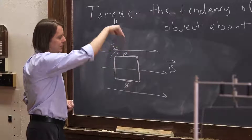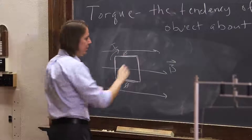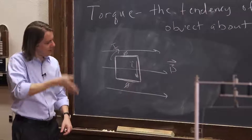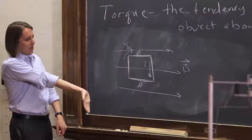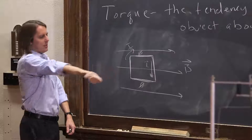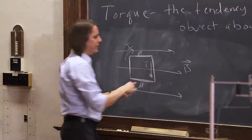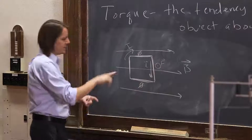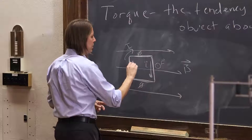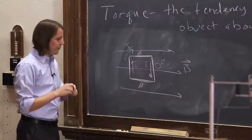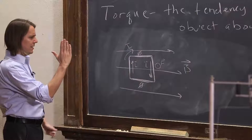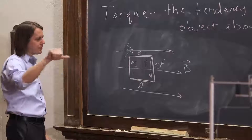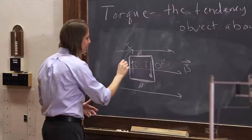But then down here, L is down, and we cross that with B. L crossed with B is out, so the force is out on this side. And here, L is up. L crossed with B in, so the force is in on that side.